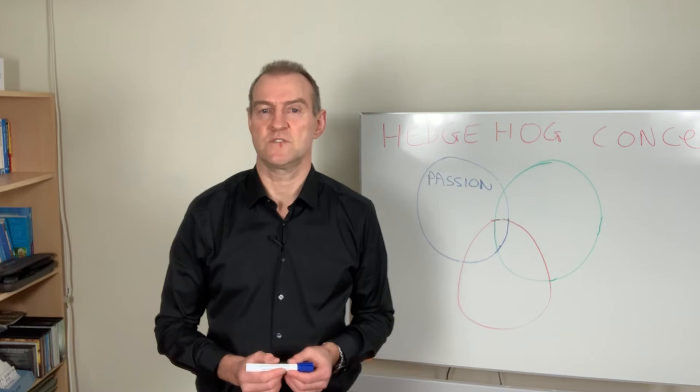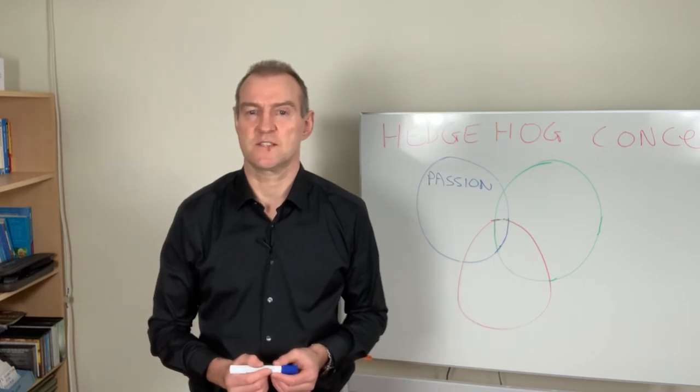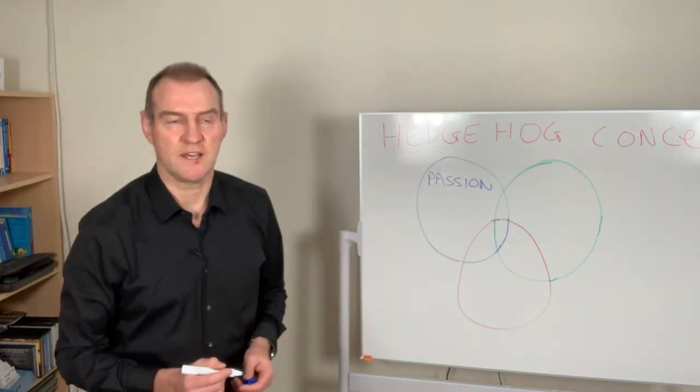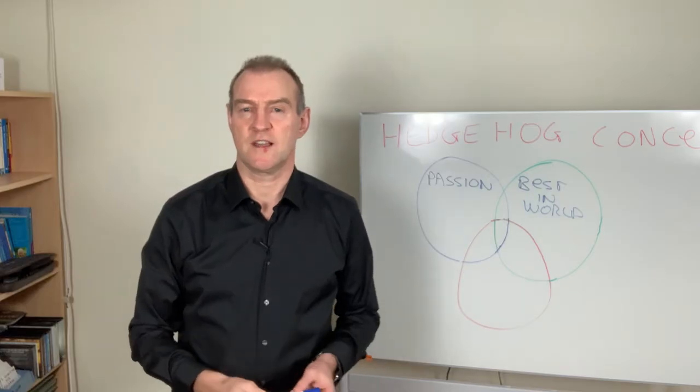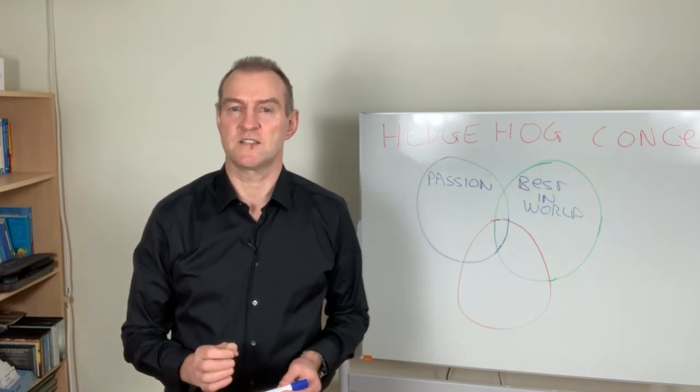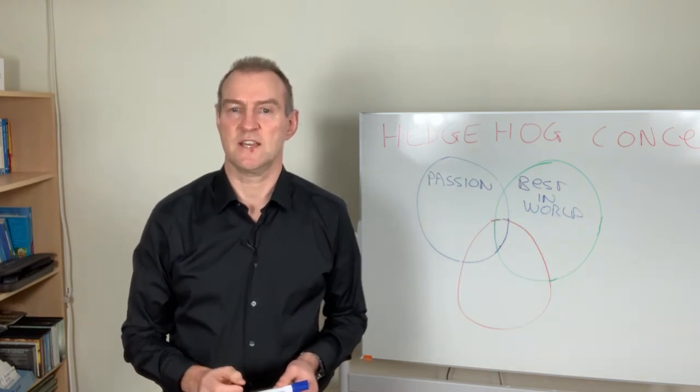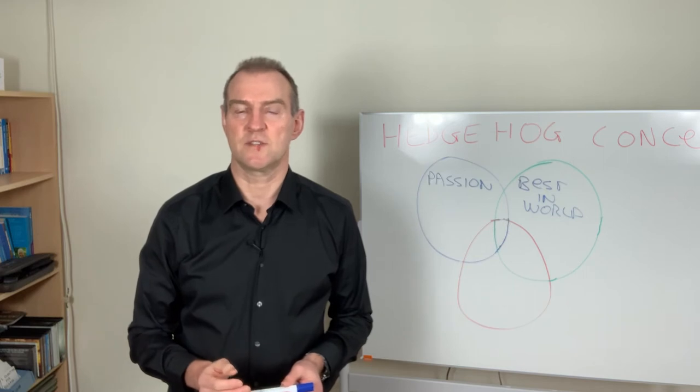The second circle is about being the best in the world. Companies can be good at lots of different things, but it's a different thing altogether to be able to say that you are involved in something, you're producing a product or providing a service that you can be the best in the world at.